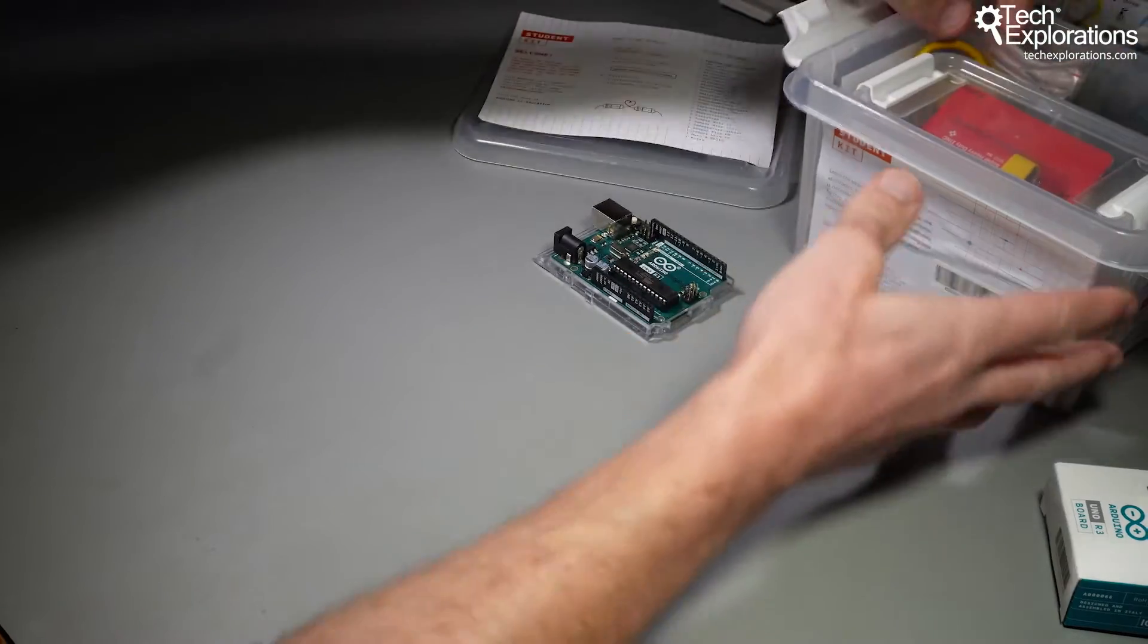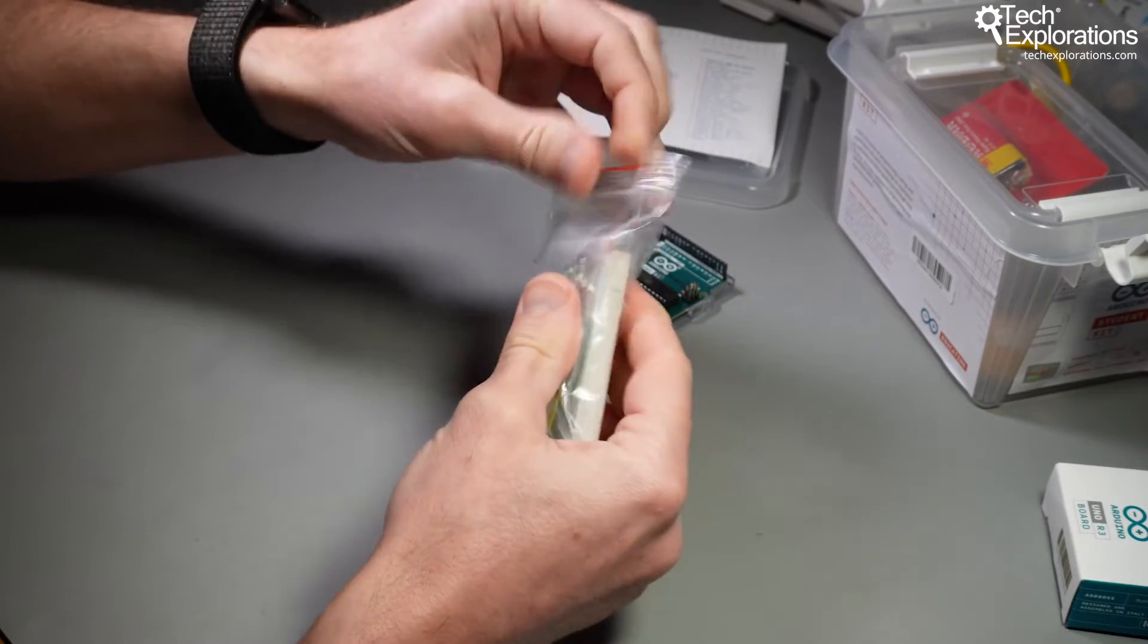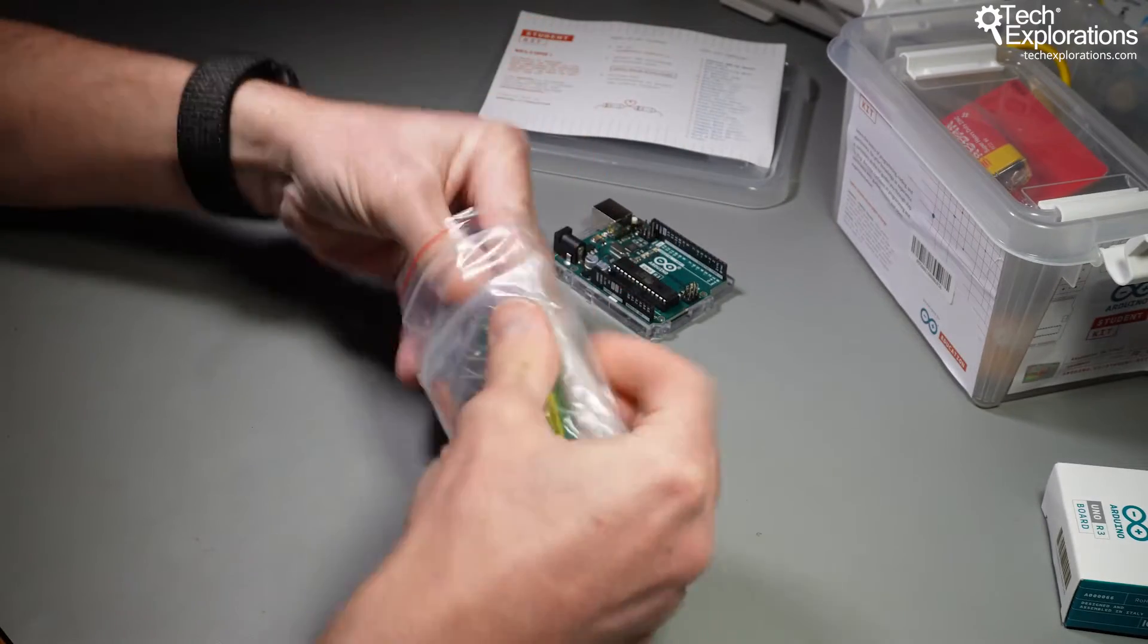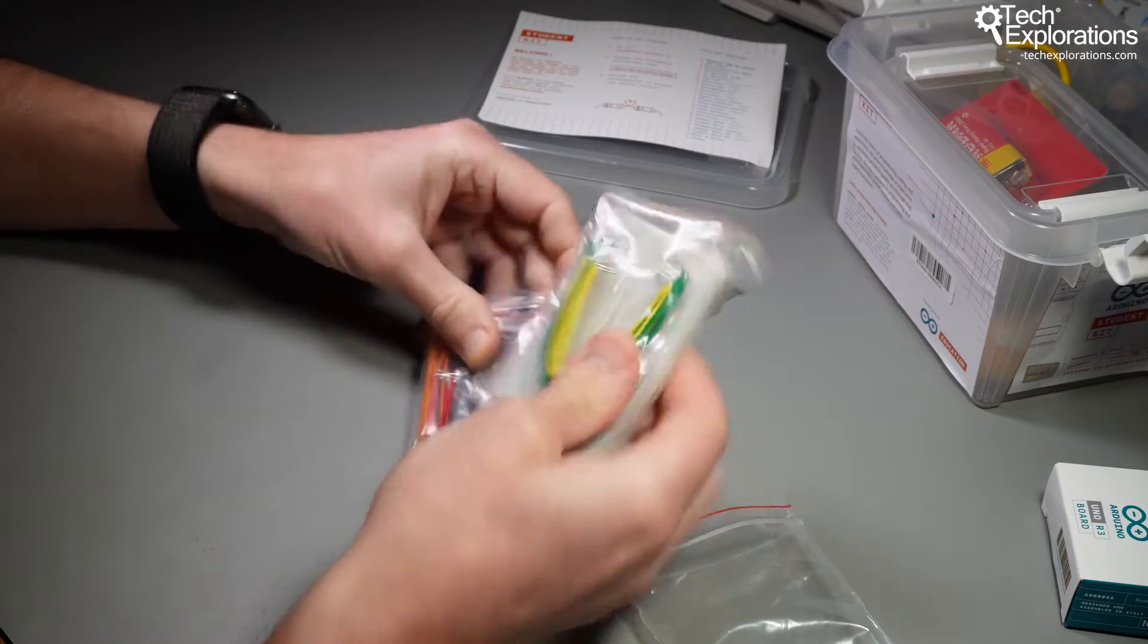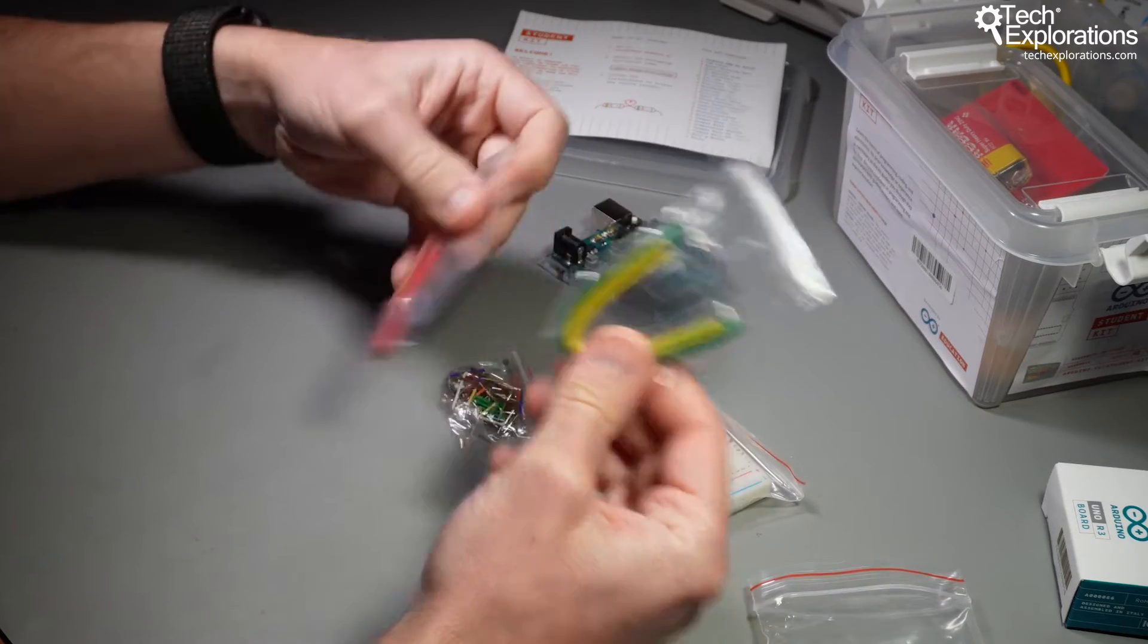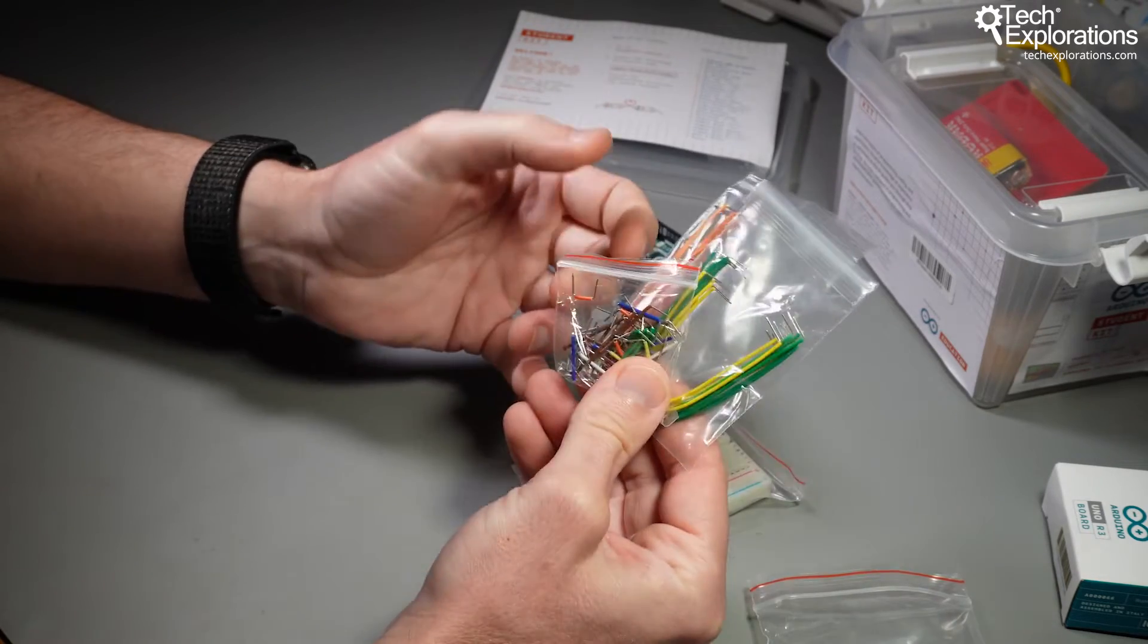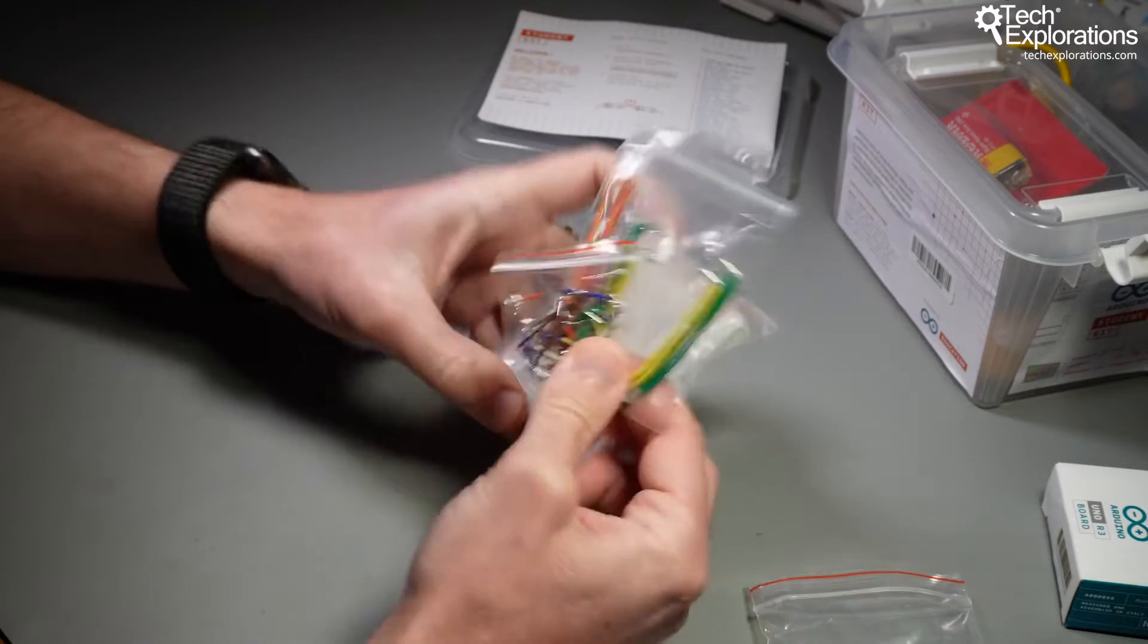Then I've got a bag here that contains a mini breadboard and jumper wires. So there's your mini breadboard. There's solid core jumper wires. Those help to create nice and tidy circuits on your mini breadboard.